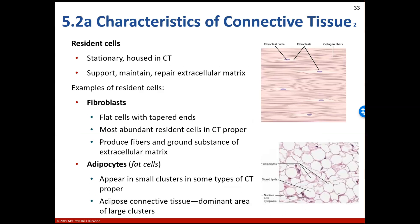Resident cells are stationary and housed within the connective tissue. They're going to be there to support, maintain, and repair any extracellular matrix that needs repairing. Examples of resident cells would be fibroblasts, which are these flat cells with tapered ends. They're going to be the most abundant cell within connective tissue proper. And they are going to produce fibers and ground substance of the extracellular matrix, hence maintaining, supporting, and doing repair.